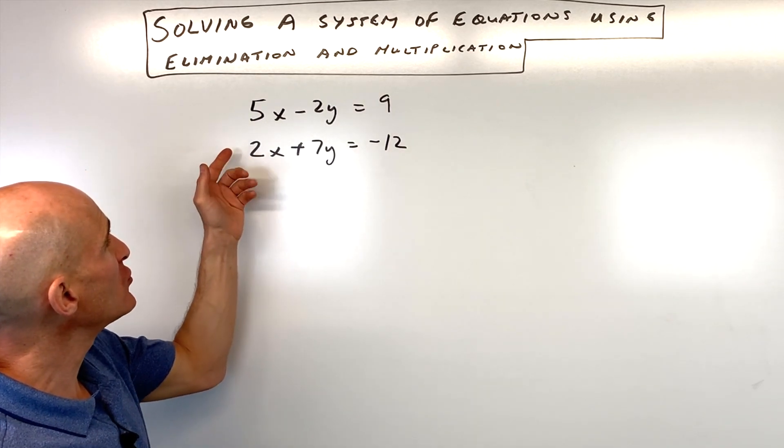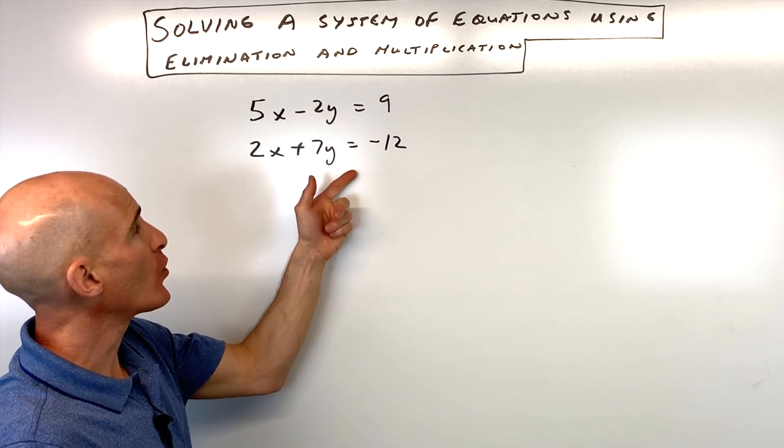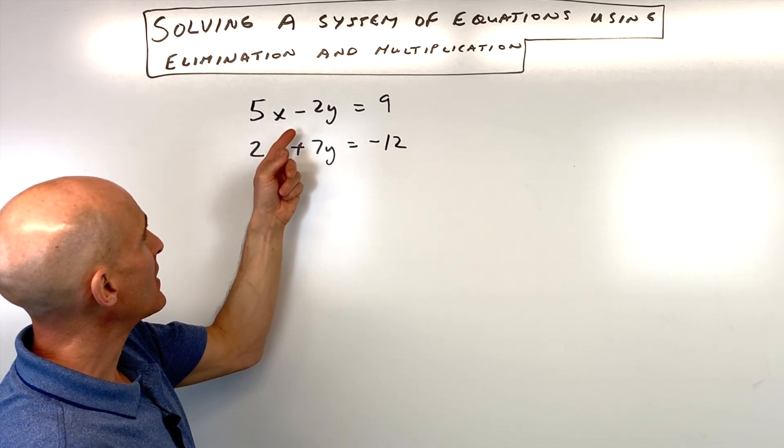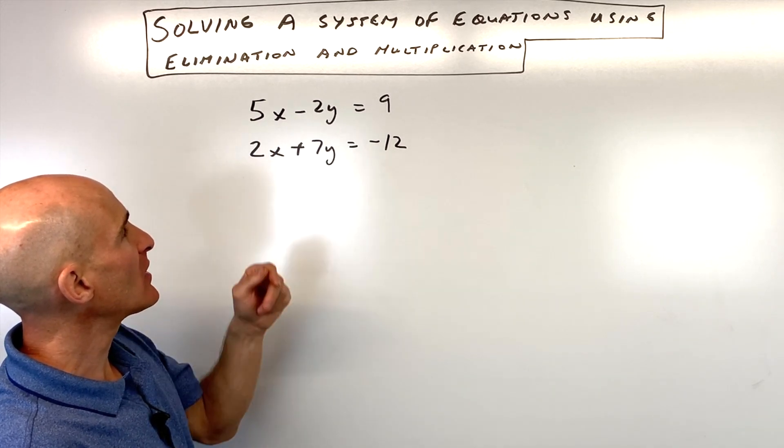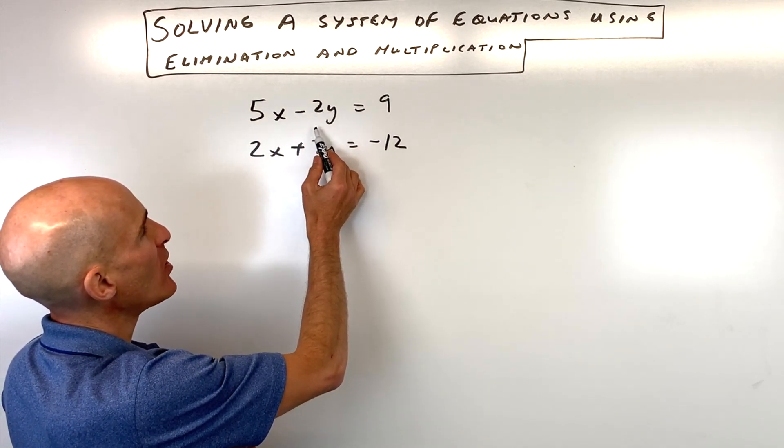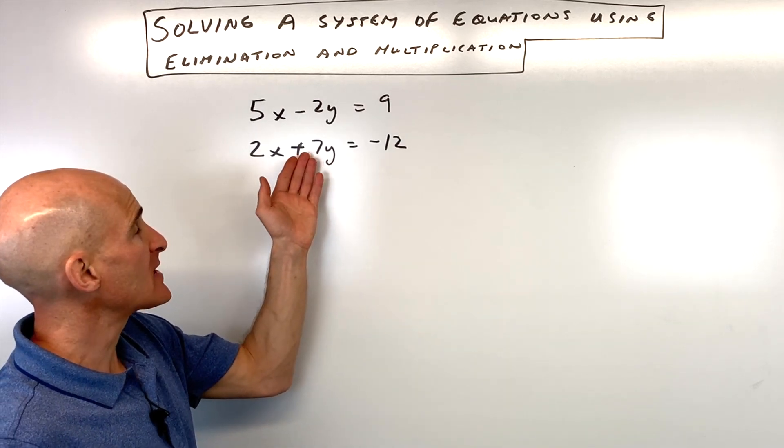In order to do that, we're going to have to multiply actually both of these equations. What I do is I either look at the y's or the x's. Let's look at the y's. If we look at the y's we say to ourselves what's the smallest number that 2 and 7 both go into? What's the lowest common multiple? Well that's going to be 14.